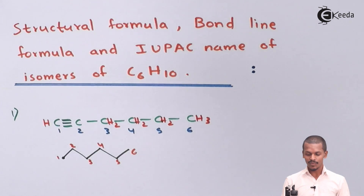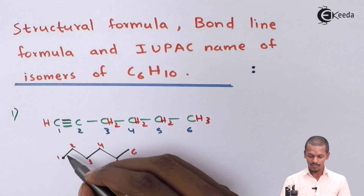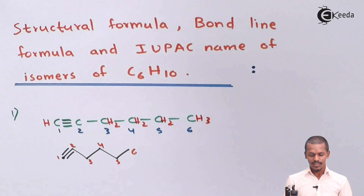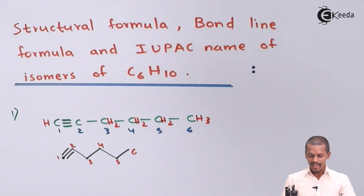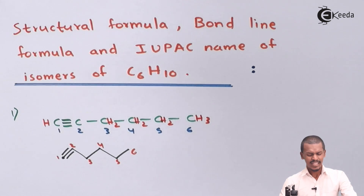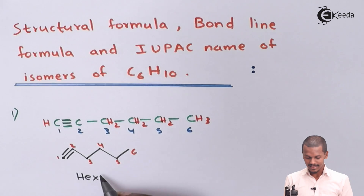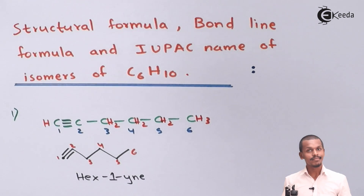The carbon-carbon triple bond is between carbon number 1 and carbon number 2. This is the bond line formula of the first isomer of C6H10. The IUPAC name of this structure is hex-1-yne, since it has 6 carbon atoms with the triple bond starting at carbon 1.